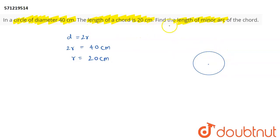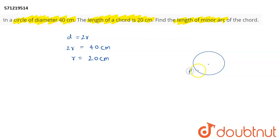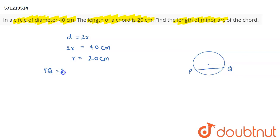Now, the length of the chord is 20 cm. A chord is a line joining two points on the circle but not passing through the center of the circle. Say these are two points P and Q. The length of PQ is given as 20 cm.